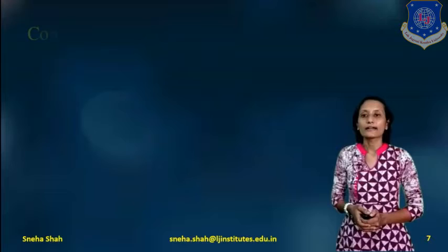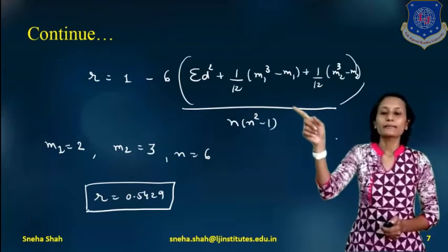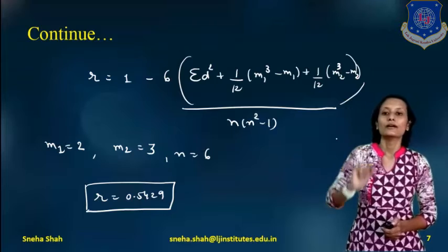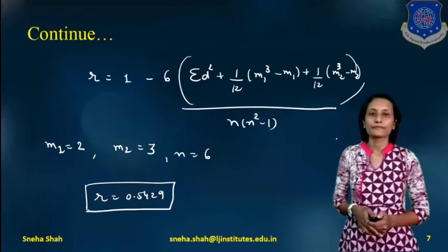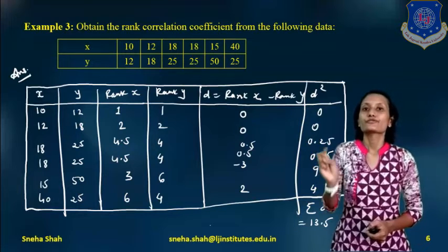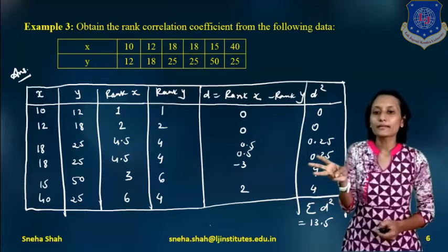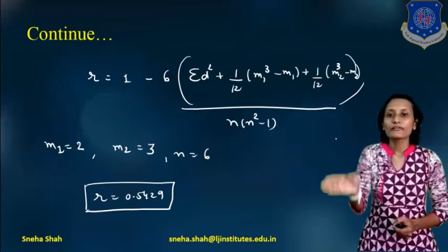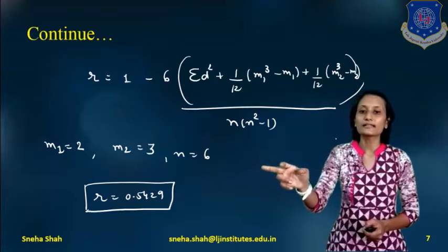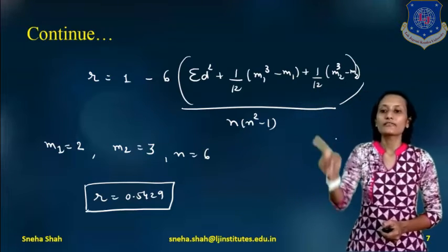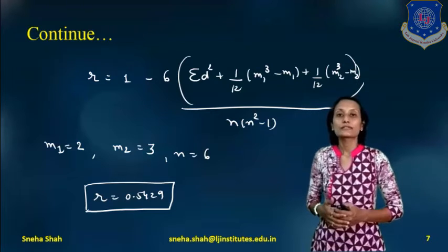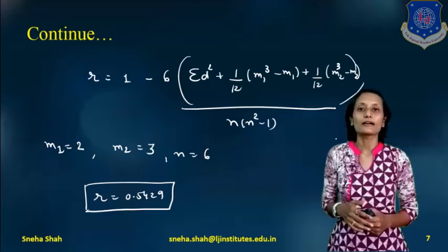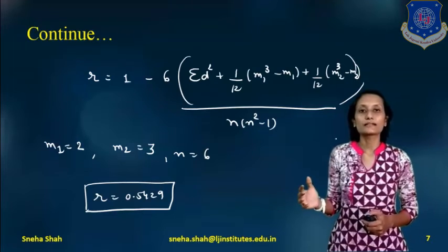Now we use the corrected formula for tied ranks: R equals 1 minus 6 times [sigma d-squared plus (1/12)(n1-cubed minus n1) plus (1/12)(n2-cubed minus n2)] divided by n into n-squared minus 1. In x, there are 2 repeated terms (18, 18), so n1 equals 2. In y, there are 3 repeated terms (25, 25, 25), so n2 equals 3. Total number of terms n equals 6. Substituting these values and solving, R equals 0.529. This is how we find the rank correlation coefficient between any two variables x and y.